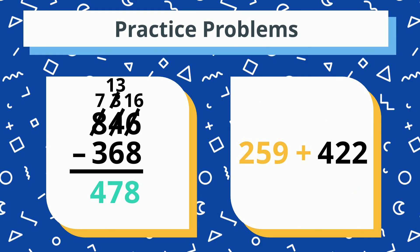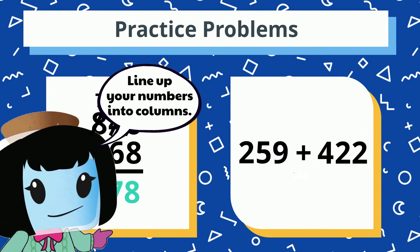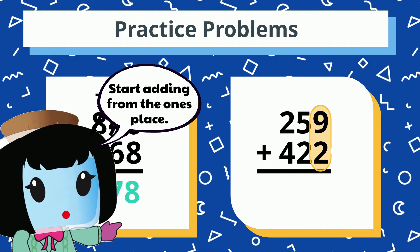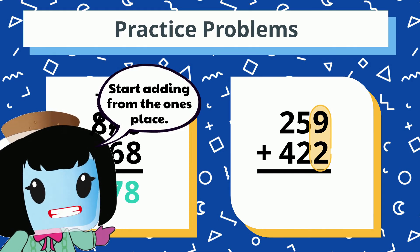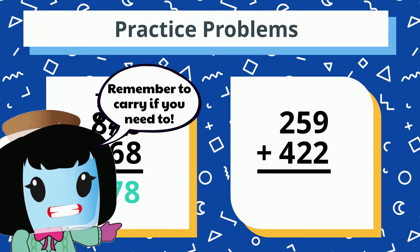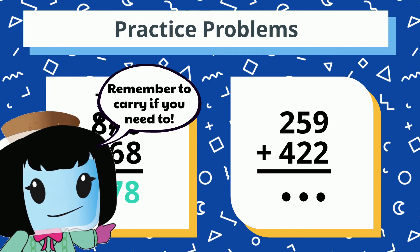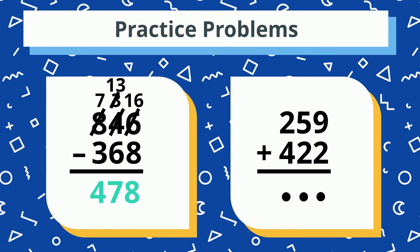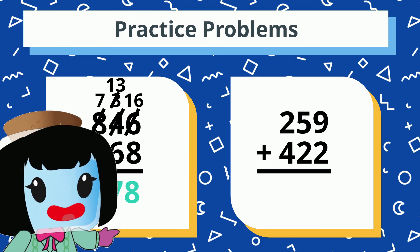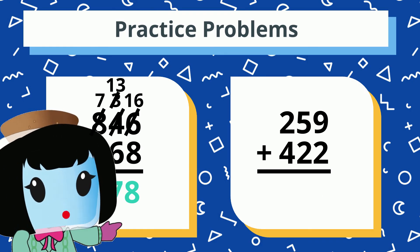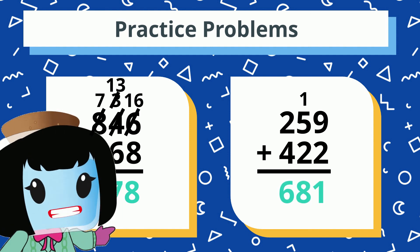259 plus 422. Line up your numbers into columns and then add starting from the ones place. Remember to carry if you need to. What did you get for your sum? 681 is correct.